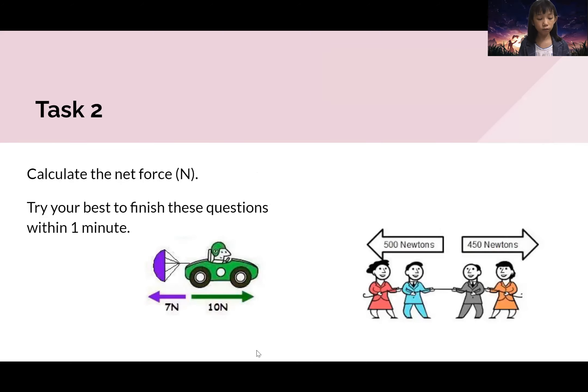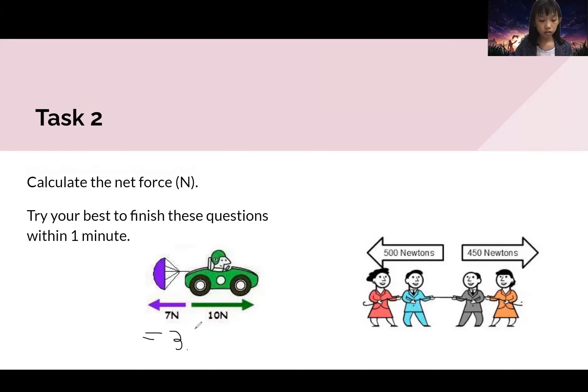Now for the answers of task two. For the first answer, the answer would be three newtons to the right. So why to the right and why three newtons? As you can see, this is seven newtons.